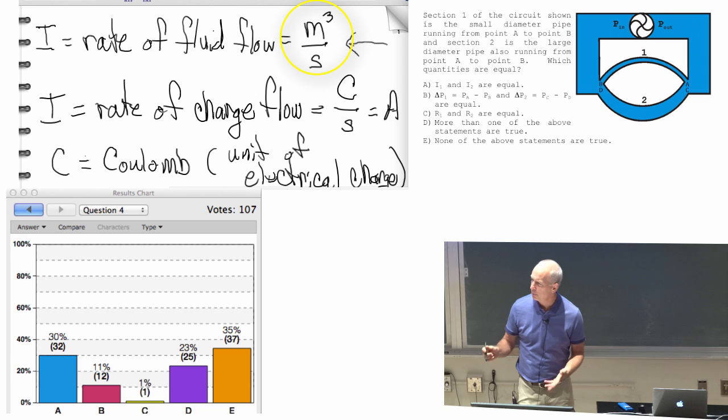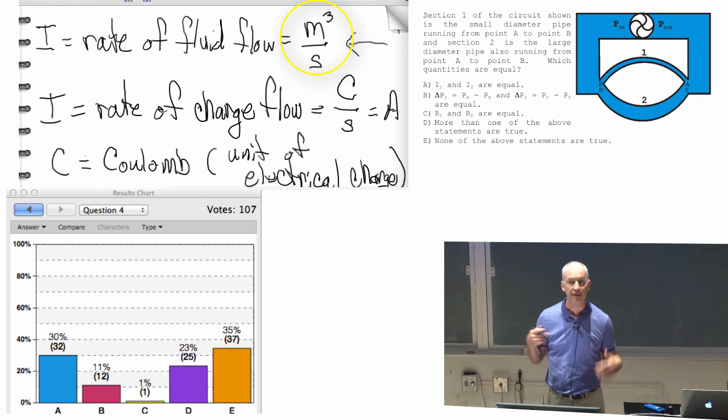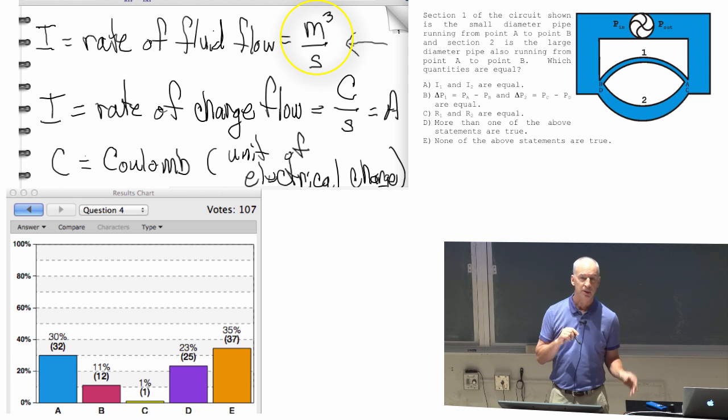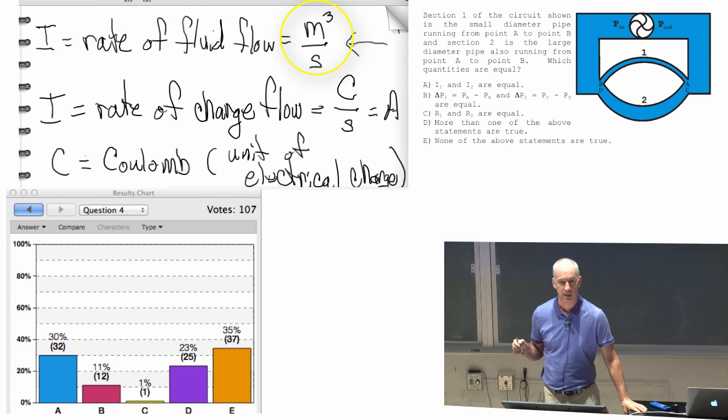It's always the amount of stuff, but when you're talking about fluids, we measure an amount in volume. And when you talk about electrical charge, we measure the amount in Coulombs.